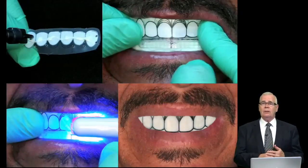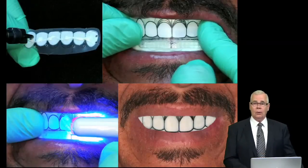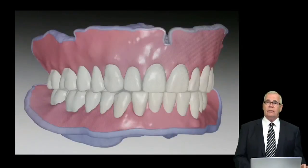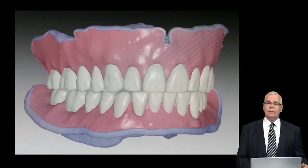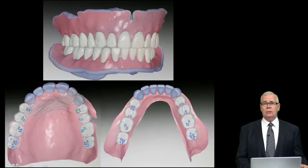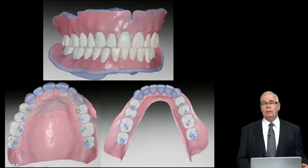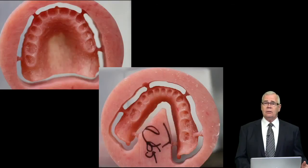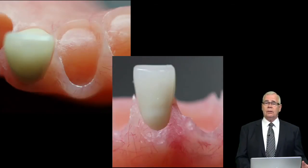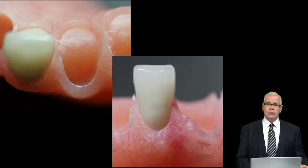We'll actually affix a template to the lip support flange and light polymerize it in position, and then we can do a wax trial placement all in one appointment. After everything is scanned, the teeth are set in the computer, the base is formed, the occlusion adjusted to what we've specified, and the type of occlusal scheme that we would like to produce.